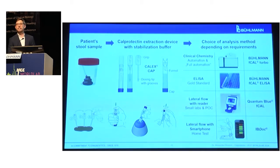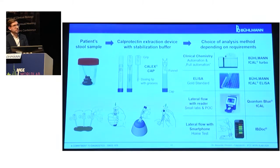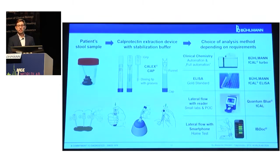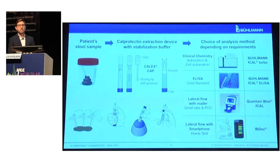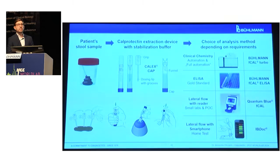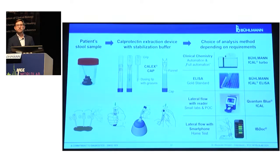There is a variety of ways to analyze and measure calprotectin for whatever requirements the laboratory or user has. We can analyze it using clinical chemistry, which allows automation or even full automation to integrate testing into laboratory workflows. There is the ELISA assay, often considered the gold standard due to its high sensitivity. There are also lateral flow assays that measure calprotectin with their own reader, ideal for small labs or point-of-care applications. Further, there are lateral flow assays that patients can do at home and read out results using their own smartphone, sending results to their treating physician — a great option for monitoring disease progression for calprotectin.